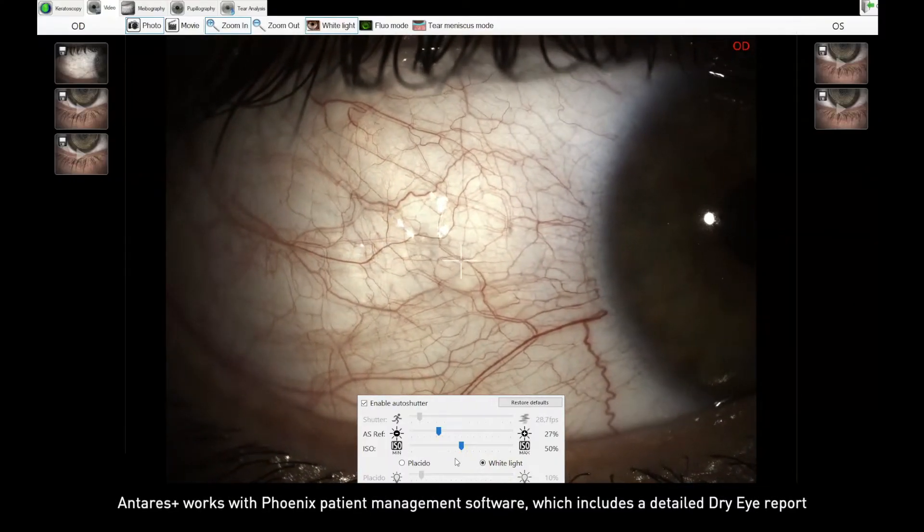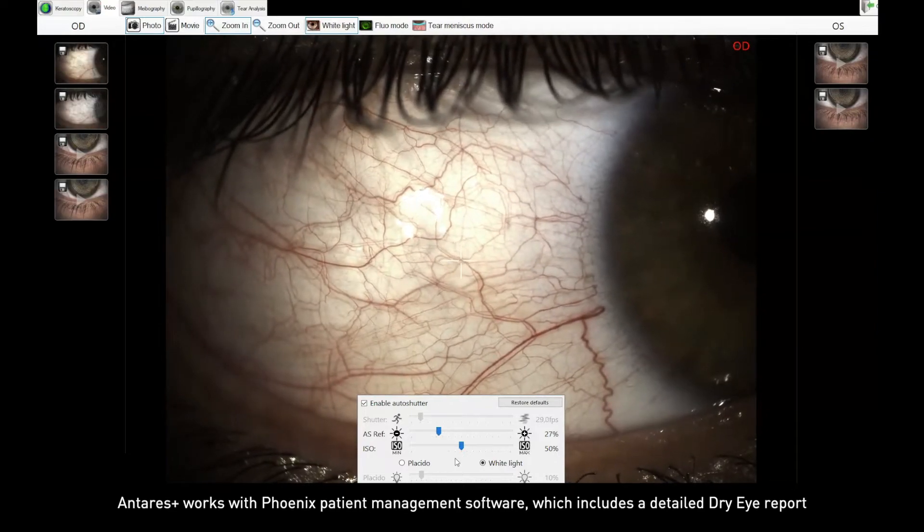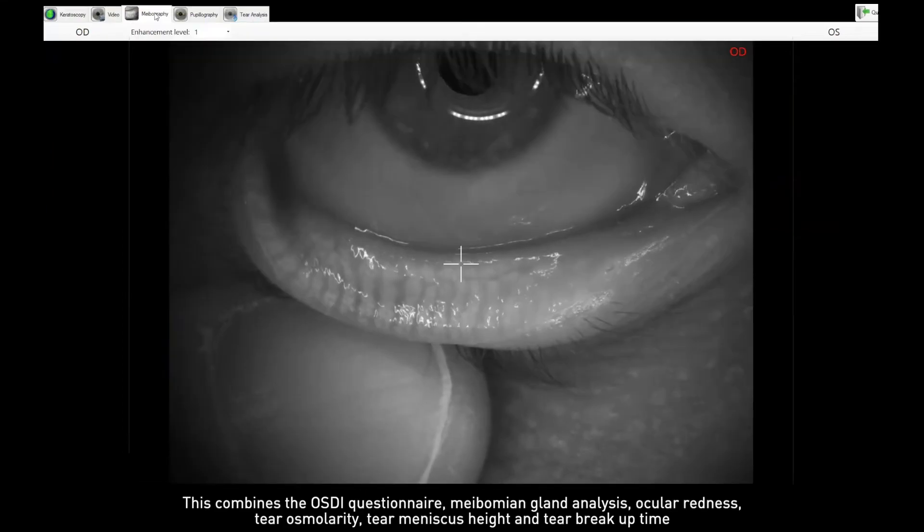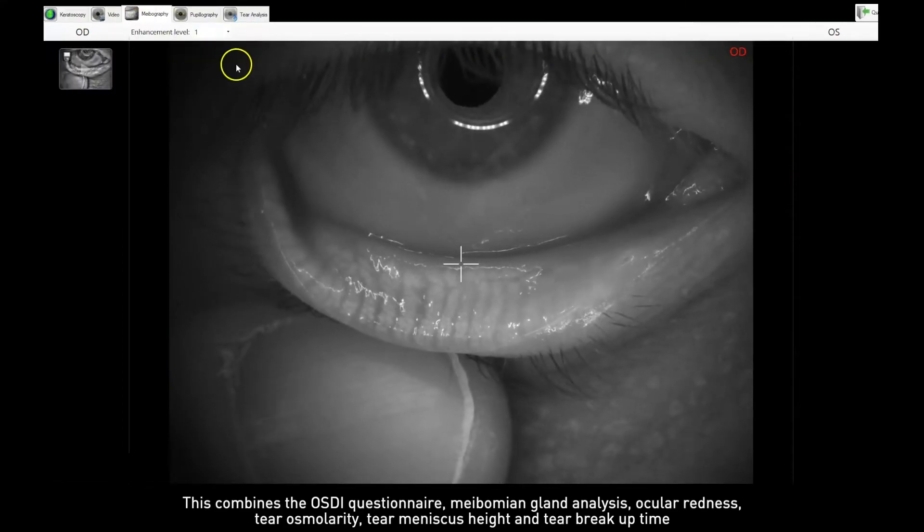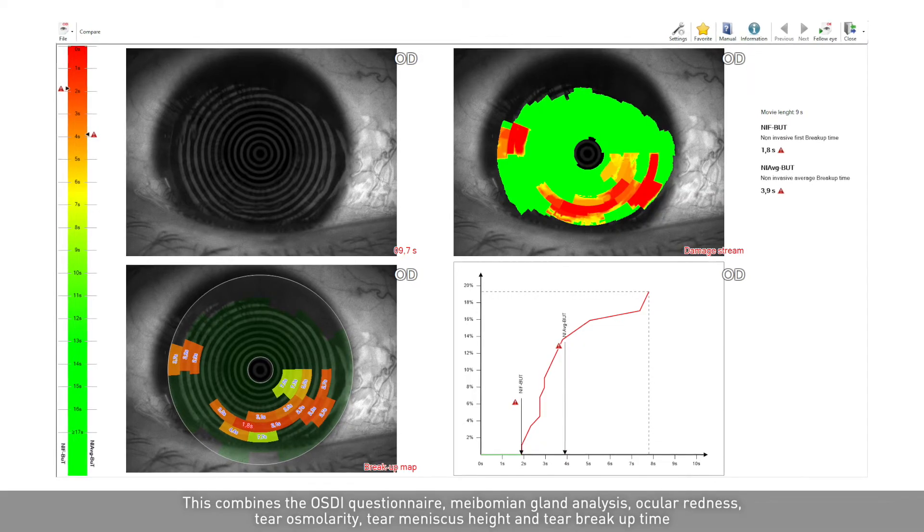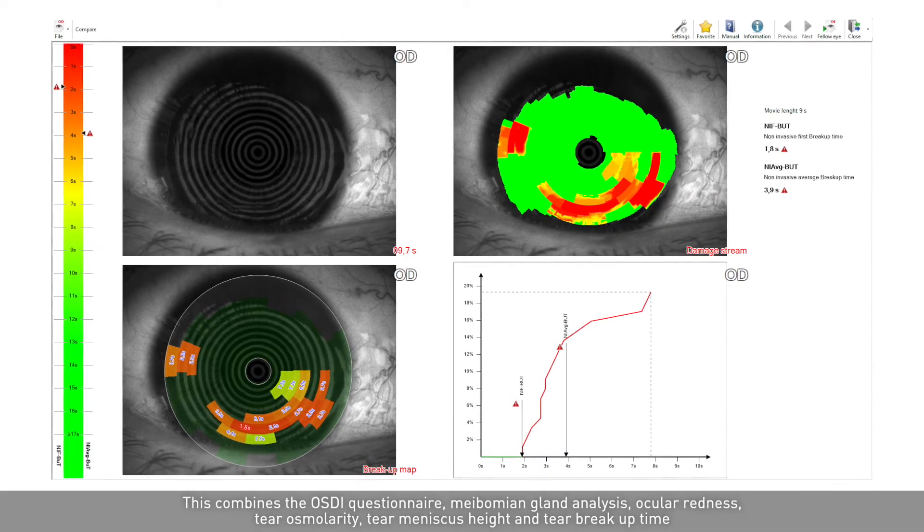Antiris Plus works with Phoenix patient management software, which includes a dry eye report. This combines the OSDI questionnaire, meibomian gland analysis, ocular redness, tear osmolarity, tear meniscus height, and tear breakup time.